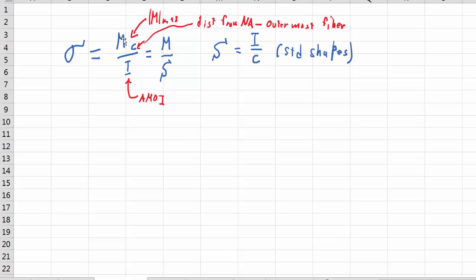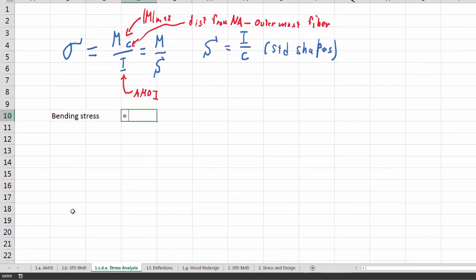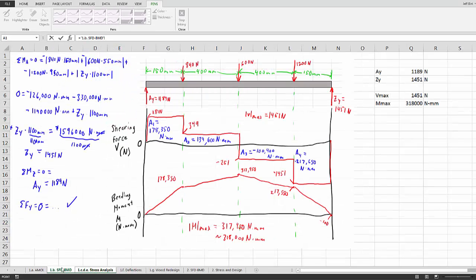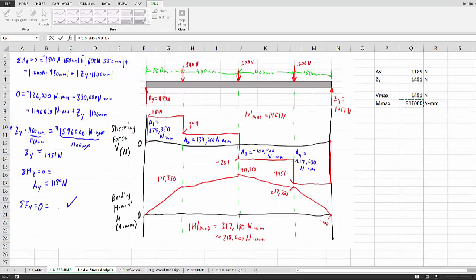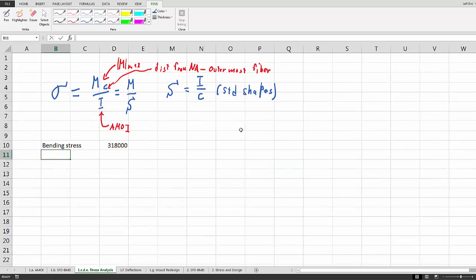Well, luckily we have M, and we now have C, and we have I. So what does that look like? We'll use Excel here, bending stress, and we'll say equals, and M is going to be right here, that in newton millimeters. So we can just click there,